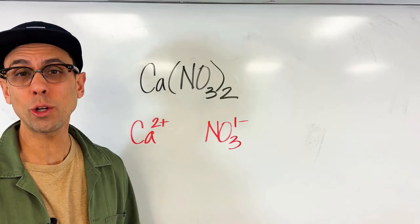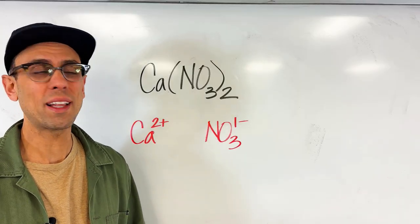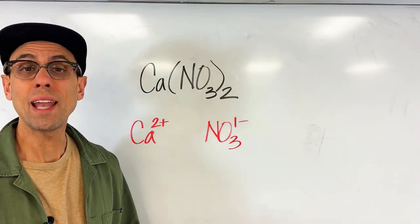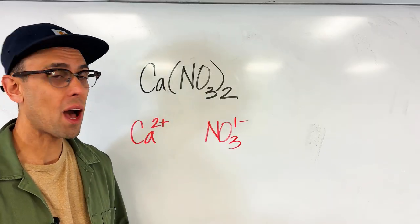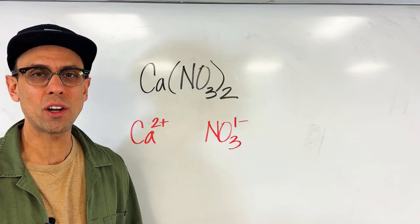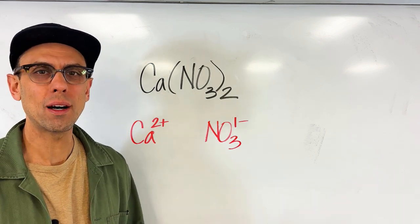Calcium being an alkaline earth metal loses two valence electrons and always has a two plus charge. Now nitrate being a polyatomic ion we know from memorization that it has a one minus charge. So step one is separate your two ions.